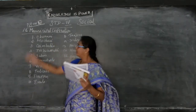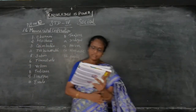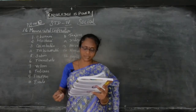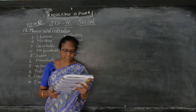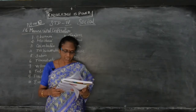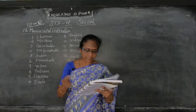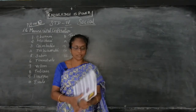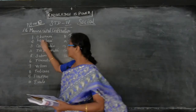So these are the 15 municipal corporations. Now, what are the duties of the corporation? As we have already seen: constructing and maintaining the city roads, providing drinking water facilities, disposing of garbage, constructing libraries and maintaining them, and creating parks and maintaining them, and maintaining records of births and deaths.